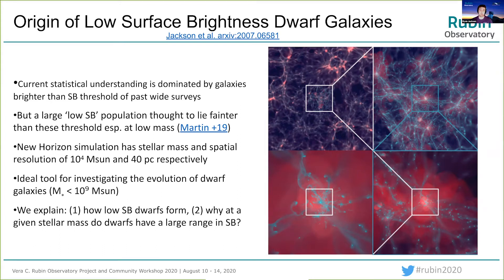In order to study these galaxies, we use the hydrodynamical cosmological simulation New Horizon, which has a stellar mass resolution of 10^4 solar masses and a maximum spatial resolution of 40 parsecs, making it an ideal tool for investigating the evolution of dwarf galaxies. In this study, we explain: one, how low surface brightness dwarfs form, and two, why at a given stellar mass the dwarfs have a large range in surface brightness.